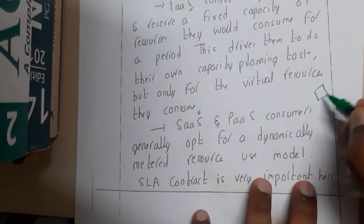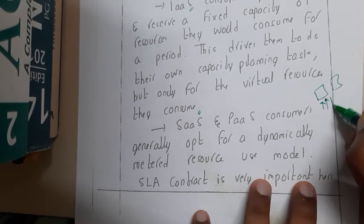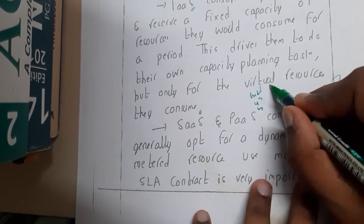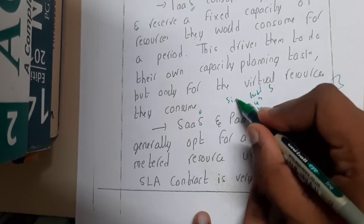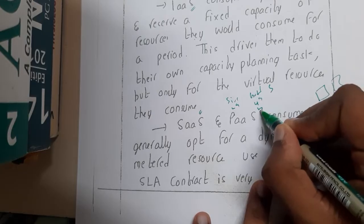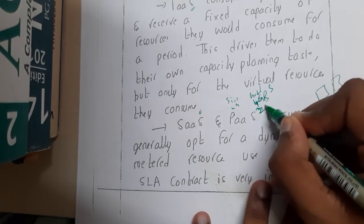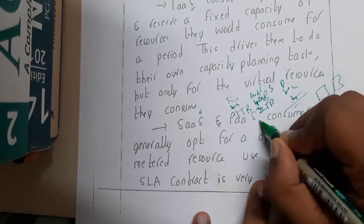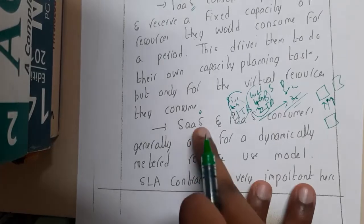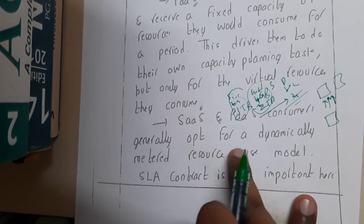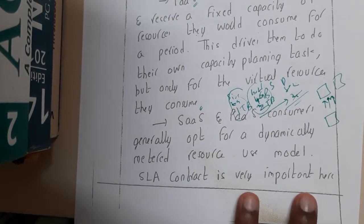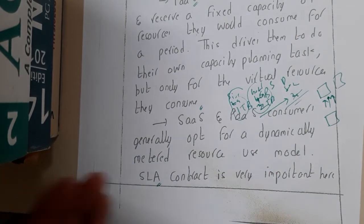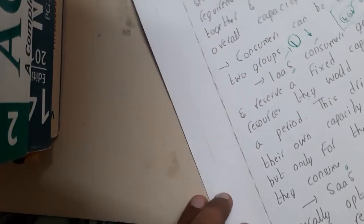For SaaS and PaaS, we have fixed components that you cannot modify directly. If you want to increase capacity, you need to change your plan. For example, a Silver plan might have 2 GB RAM and 1 TB hard disk, Gold might have 4 GB RAM and 2 TB hard disk, and Diamond might have 8 GB RAM and 4 TB hard disk — you move between plans as needed. All these things are controlled by the SLA, which is the contract agreement between the customer and the service provider.